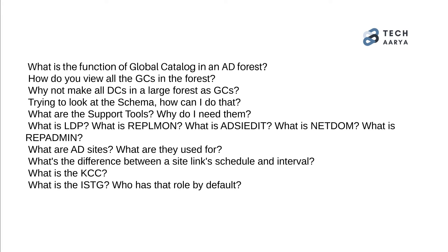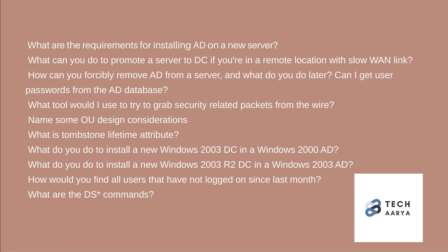87. What are AD sites? What are they used for? 88. What is the difference between a site link's scheduling and interval? 89. What is the KCC? 90. What is the ISTG? Who has that role by default? 91. What are the requirements for installing AD on a new server? 92. What can you do to promote the server to DC if you are in a remote location with a slow WAN link?